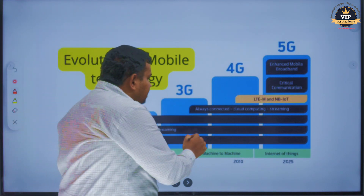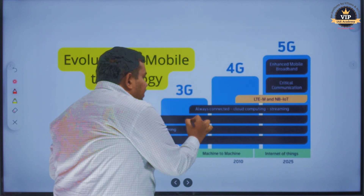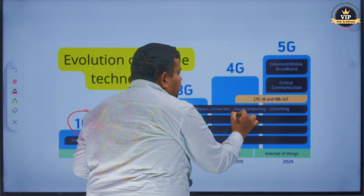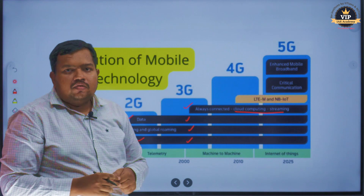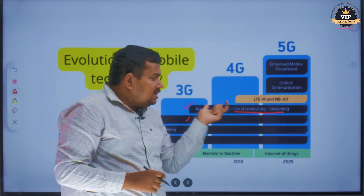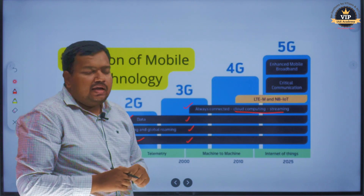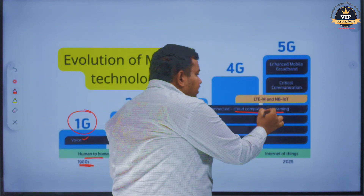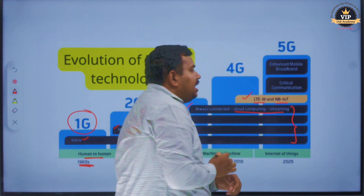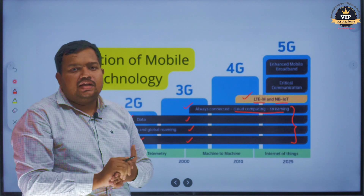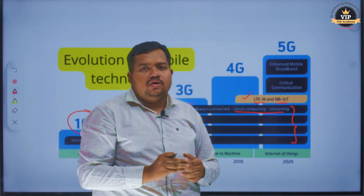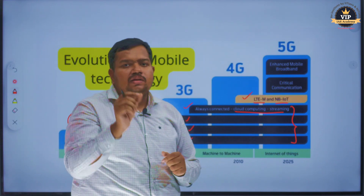Then came 3G, which included all the applications of 2G along with always-connected cloud computing and streaming. That streaming and cloud computing was not allowed in 2G but was allowed in 3G. And 4G added LTE and IoT. There was already a previous year question on LTE and VOLTE in the 2019 prelims.